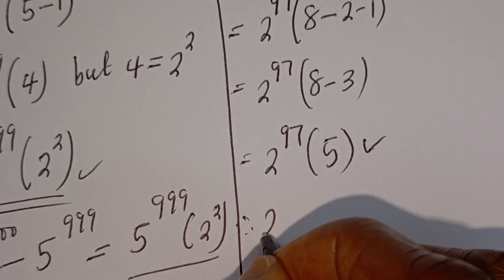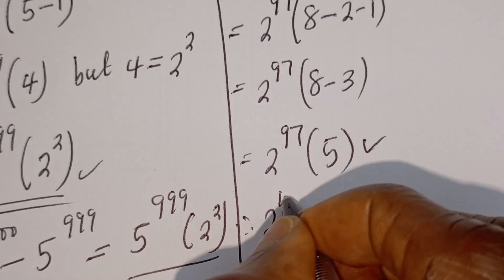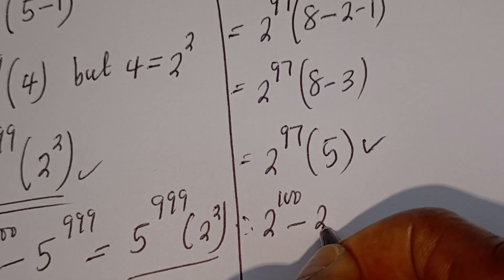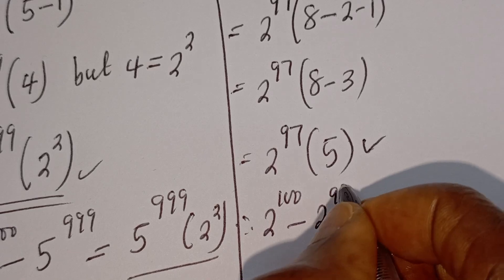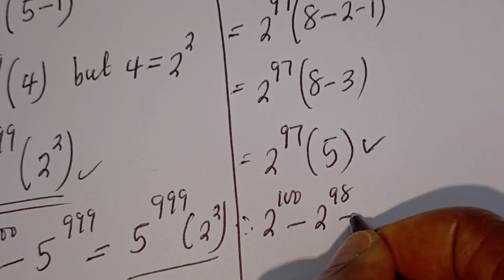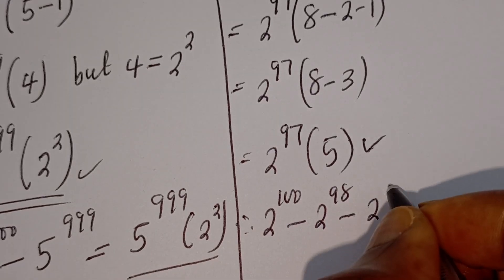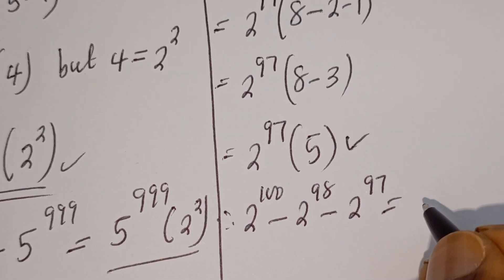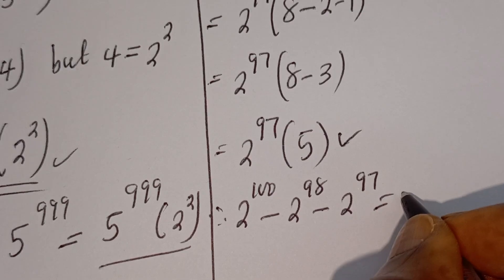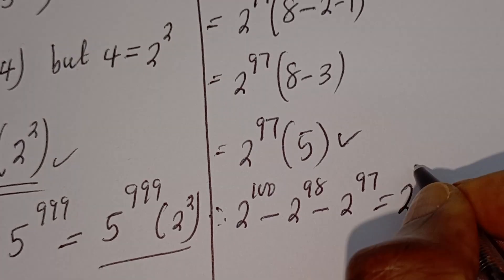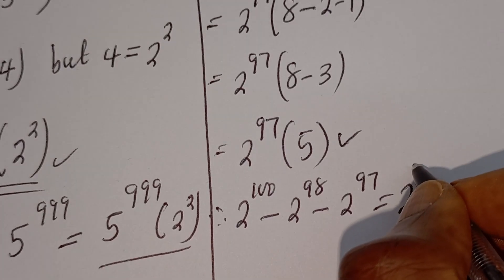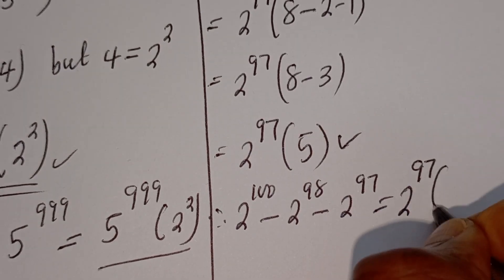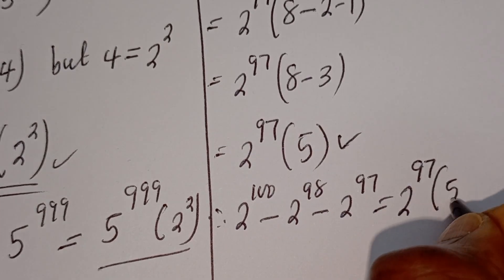Therefore, 2 to the power of 100 minus 2 to the power of 98 minus 2 to the power of 97 is equal to 2 to the power of 97 multiplied by 5.